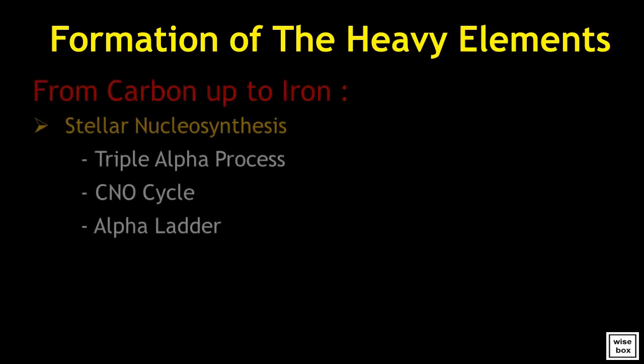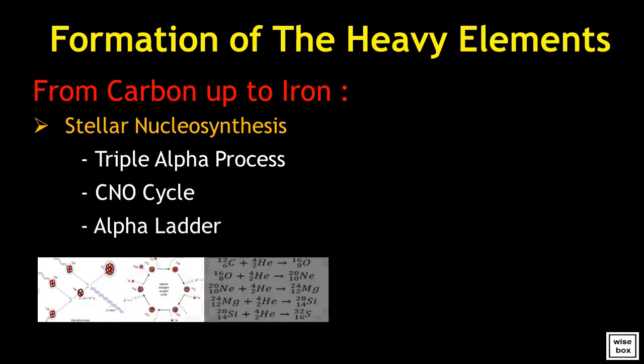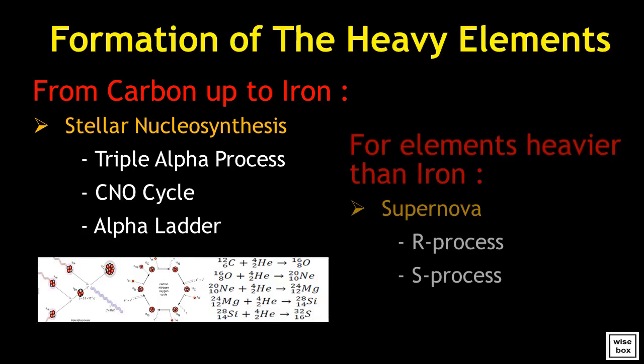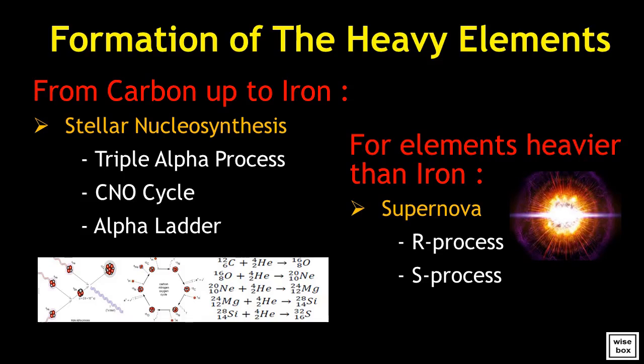In summary, the formation of elements from carbon up to iron is known as stellar nucleosynthesis. This involves the triple alpha process, the carbon-nitrogen-oxygen cycle, and the alpha ladder. Elements heavier than iron like uranium or gold are produced through the supernova. It involves the rapid R-process and the slow S-process.